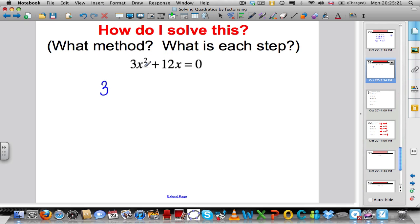Well, 3 does, because 3 goes into 3x squared and 3 goes into 12x, and also there's an x that goes into both. So, divide out the 3x. 3x squared divided by 3x just leaves you with x. 12x divided by 3x leaves you with 4. That's equal to 0.